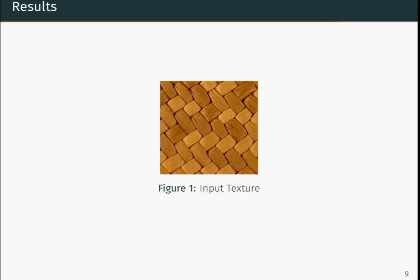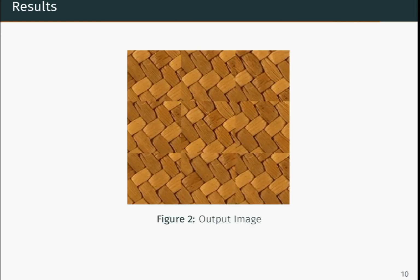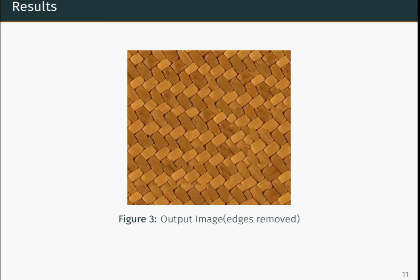The results: The first image is the input texture image from which we take patches to synthesize the output. The next image is the output produced without finding the minimum error boundary cut. You can see the edges are very noticeable in this image. The next image is the final synthesized output using the minimum error boundary cut. All edges are removed and the quality significantly improved compared to the previous one.